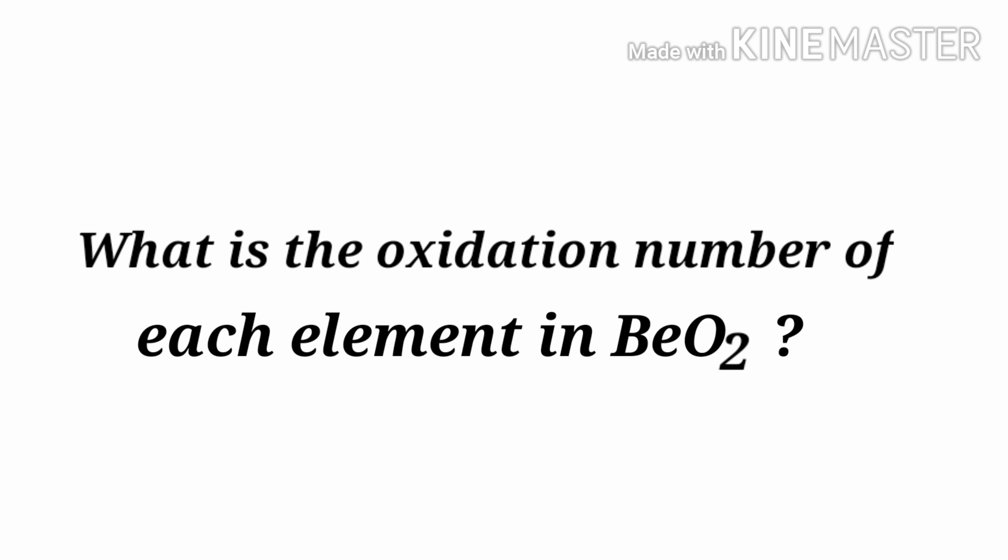What is the oxidation number of each element in beryllium peroxide? We can use the oxidation number rules to determine oxidation numbers. Beryllium peroxide is a neutral compound with overall oxidation number 0.